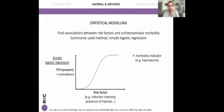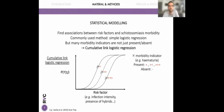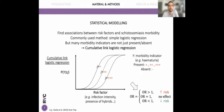We tried to find associations between risk factors — such as infection presence and intensity, or presence of hybrids — and schistosomiasis morbidity. Instead of using the most common simple logistic regression, which only models the presence or absence of a given morbidity indicator, we used cumulative link logistic regression, because we had many morbidity indicators with different categories. This type of model allows us to integrate this information and therefore improve statistical power. Results were expressed as odds ratios, where an OR above 1 means increased risk, and an OR below 1 means decreased risk.